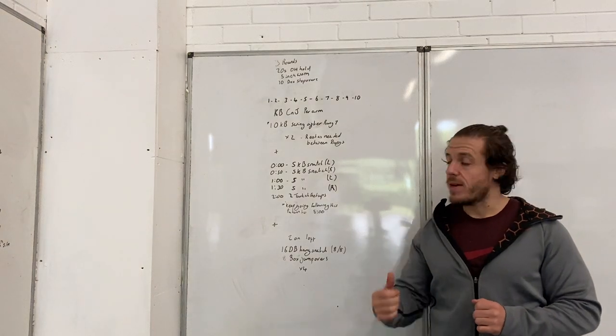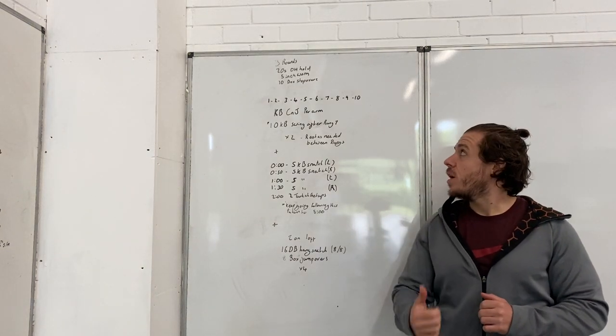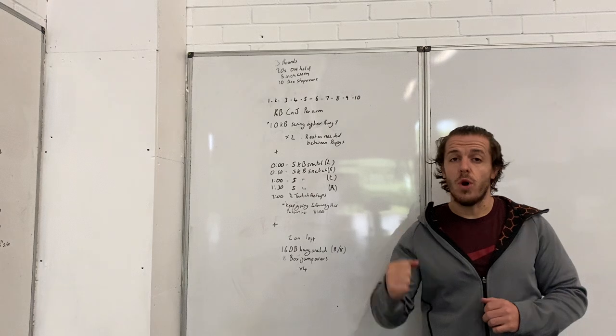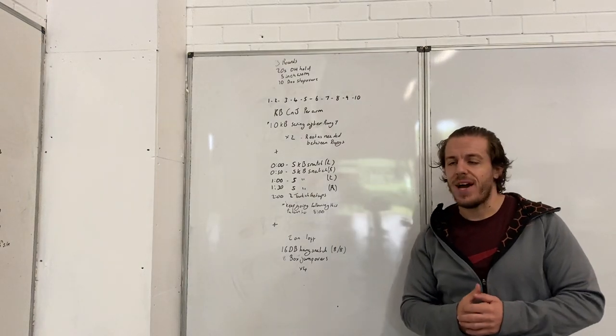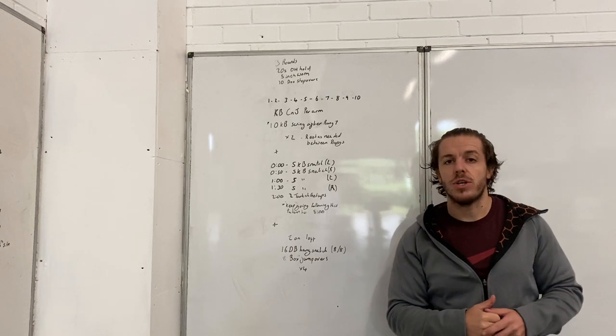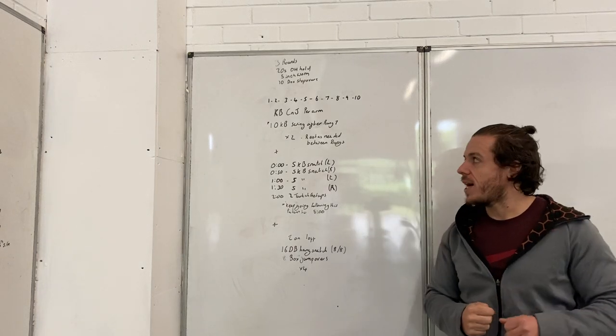Obviously you're going to warm up first of all. You got 20 seconds overhead hold with a dumbbell or a kettlebell, five inchworms, ten box step overs. You're going to do three rounds of that.